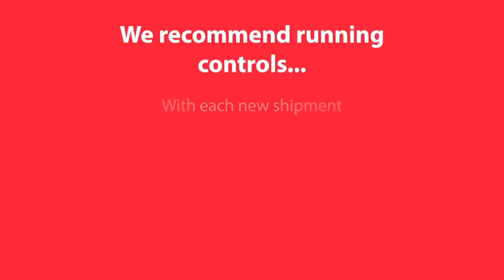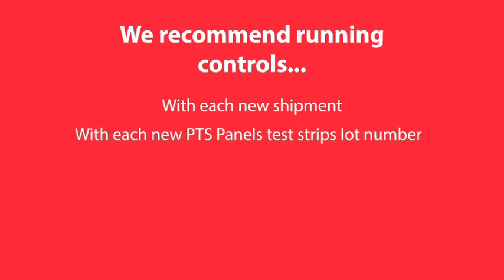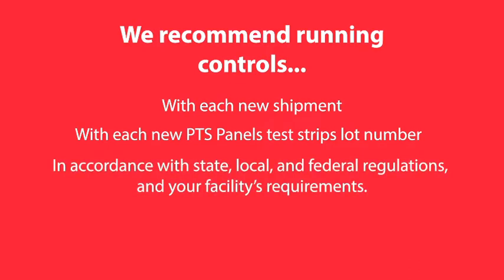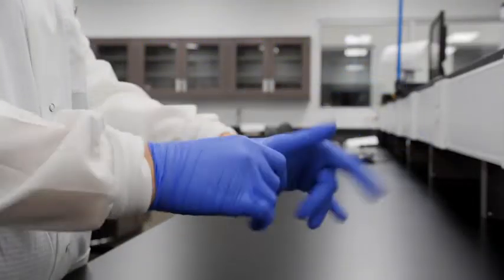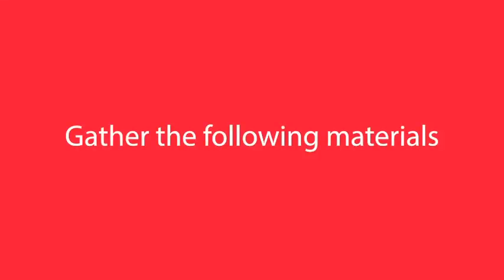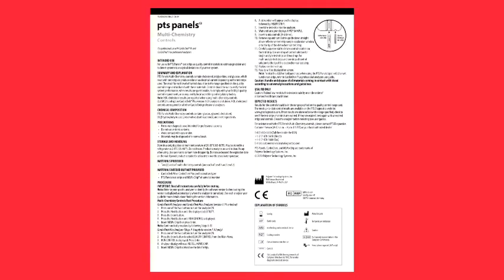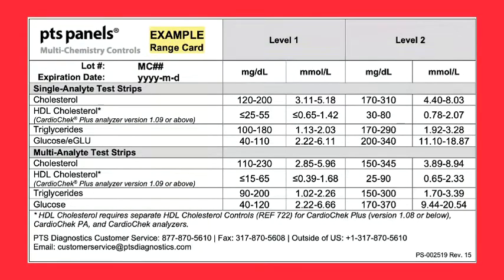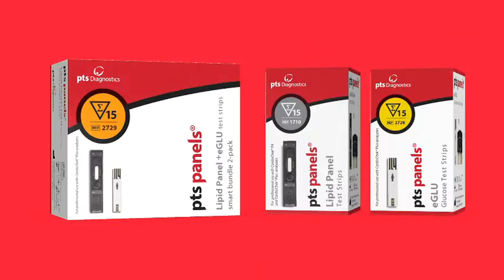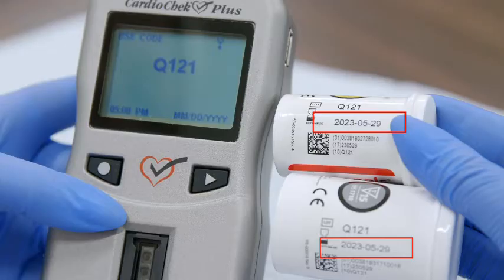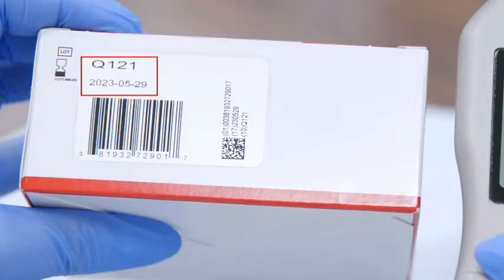Running quality control helps to ensure the accuracy of your test system. We recommend running controls with each new shipment, with each new PTSPanels test strips lot number, and in accordance with state, local, and federal regulations and your facility's requirements. To run controls, first put on medical quality disposable gloves. Then gather the following materials: the CardioCheck Plus Analyzer, the Level 1 and Level 2 Multi-Chemistry Liquid Control Materials, the Quality Control Instructions found in the box with your control materials, the Quality Control Range Card found in the box with the control materials or at ptsdiagnostics.com, and the PTSPanels Test Strips and Memo Chip.